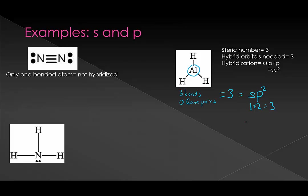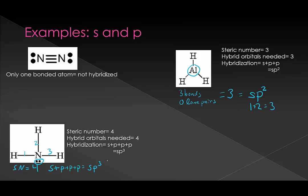If we look at our chart or think about how many orbitals we need, that's going to be an s and then two p orbitals: 1 + 2 = 3. So AlH3's central atom is sp2 hybridized. Next, here we have ammonia. Its steric number: three bonds and one lone pair gives a steric number of four, meaning it is sp3 hybridized.